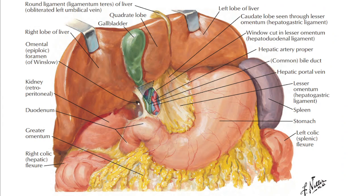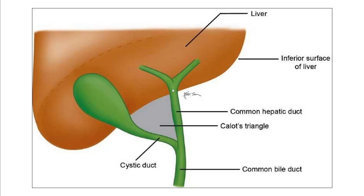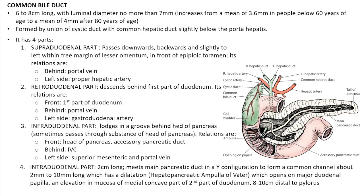This shows a clearer view of the cystohepatic or Calot's triangle. The epiploic foramen (foramen of Winslow) lies behind the right free margin of the lesser omentum. Medially is the common hepatic duct, inferolaterally is the cystic duct, and superolaterally is the inferior surface of the liver — specifically the inferior surface of the fifth segment.